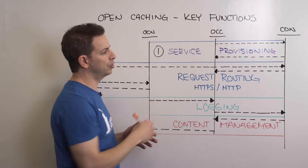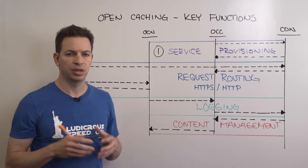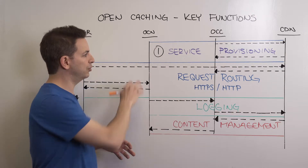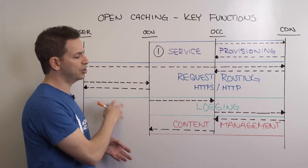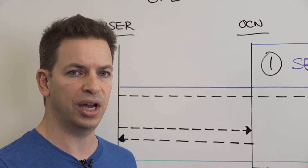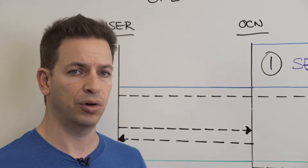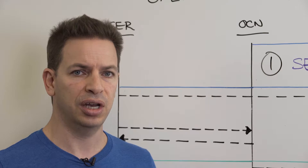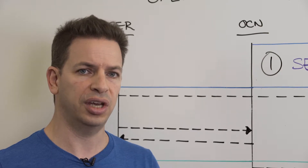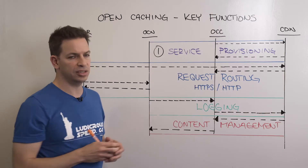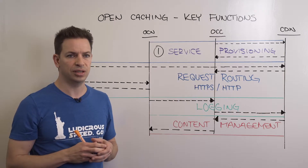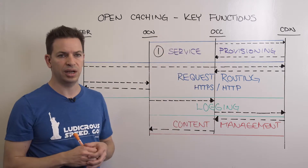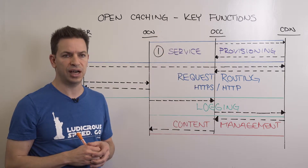In the inverse direction, the OCC notifies the CDNs of the footprint of the entire open caching system in this individual ISP, what the capabilities of that open caching system are, and also what SLAs that CDN is expecting to get from the OCS deployed in this specific ISP.